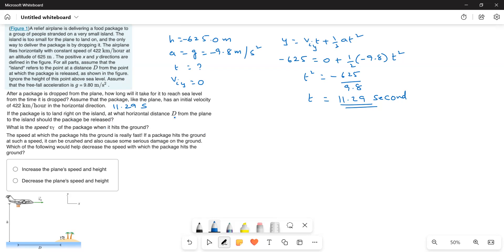at what horizontal distance from the plane to the island should the package be released? So, for this, what I do is, d is equal to v t. So, but here the velocity is given as v_x, v_ix is equal to 422 kilometers per hour.